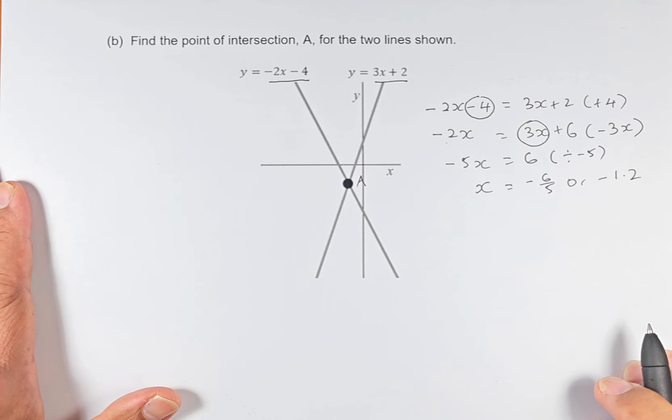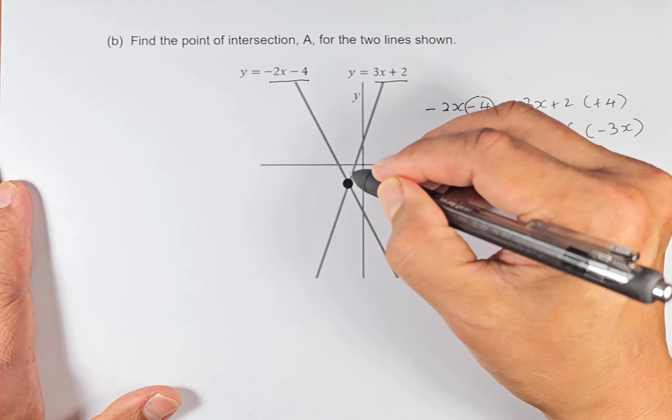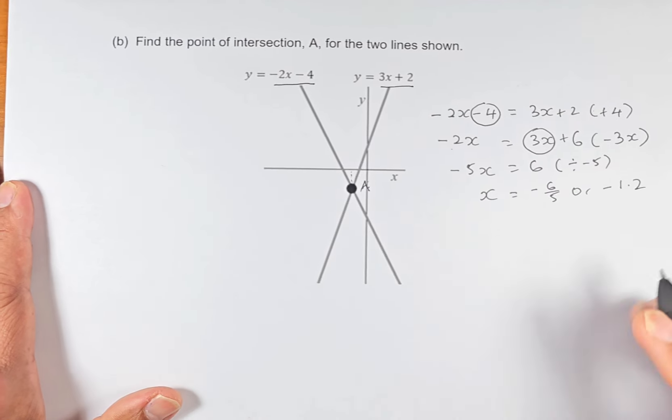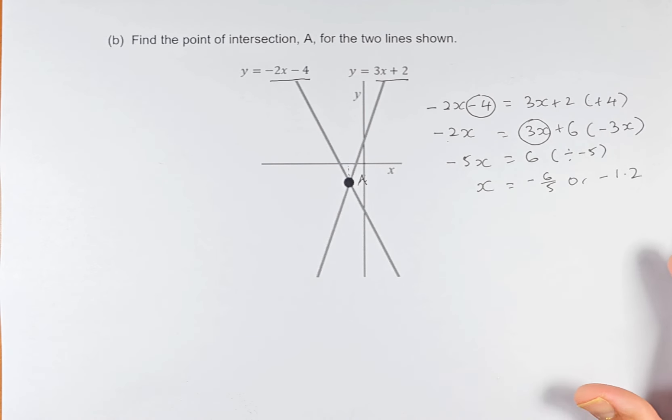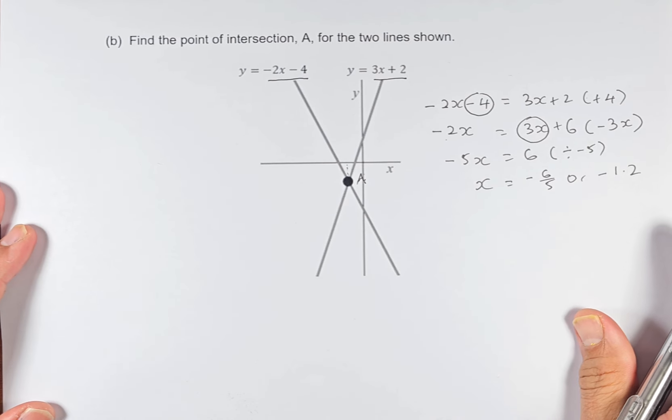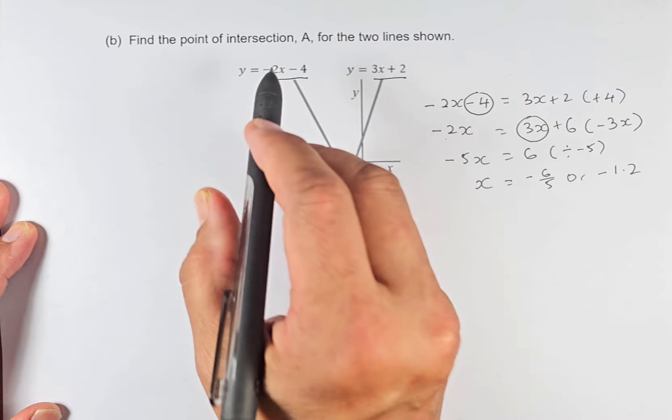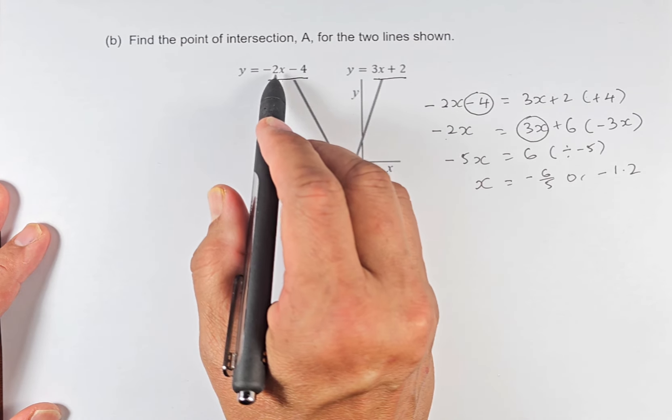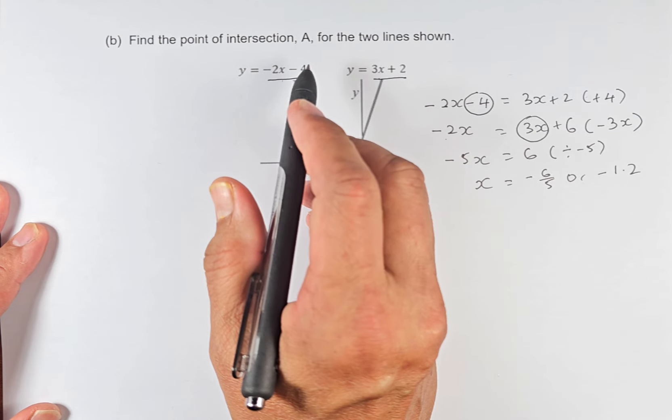Of course, when you have a coordinate, you must find what the x value is and also what the y value is. To get the y value, what are we going to do? We substitute into either this equation or that equation. Because y equals 3x + 2, and y also equals -2x - 4. Which one is easier?